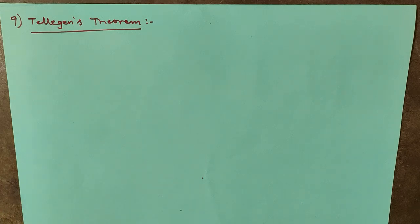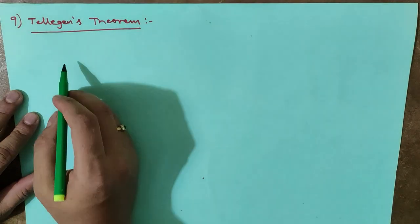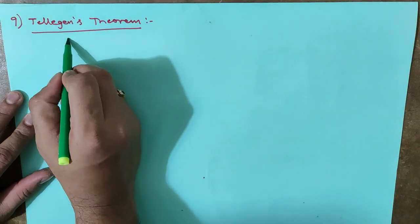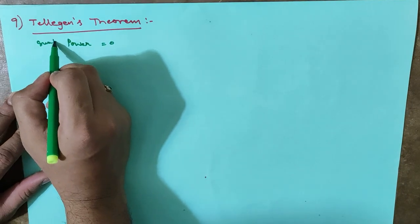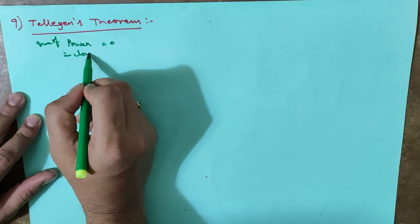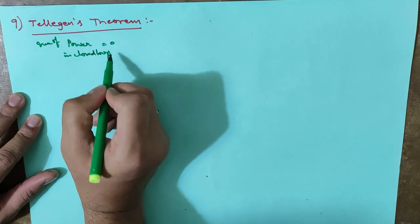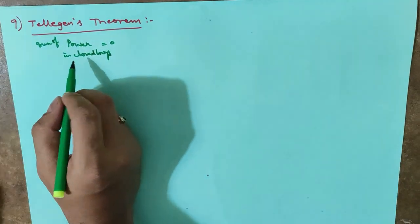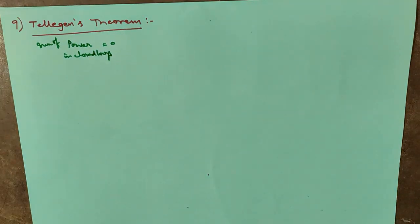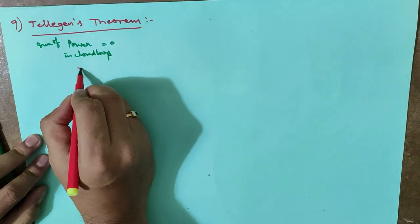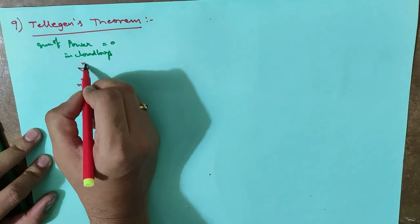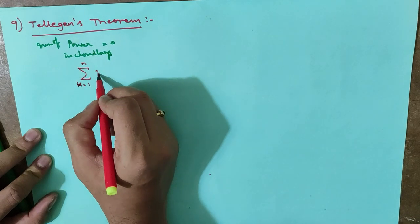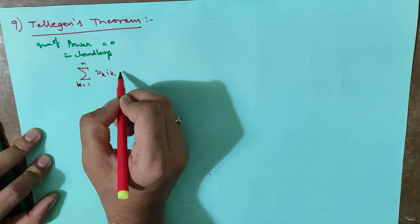Hi friends, in this video let us discuss Tellegen's theorem. Tellegen's theorem means the power delivered in any closed loop is equal to zero — that is, the sum of the powers in any closed loop is equal to zero. Practically this is represented as sigma k equal to 1 to n, Vk·Ik = 0.